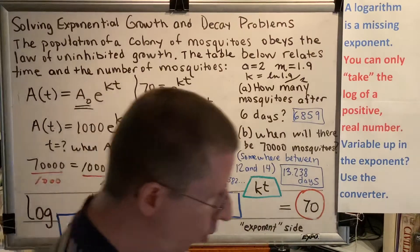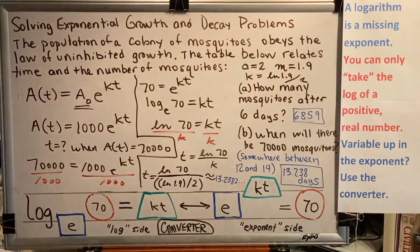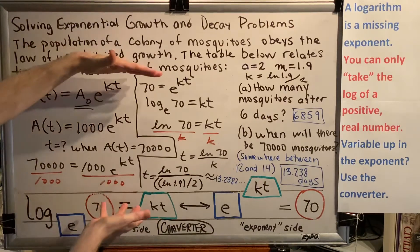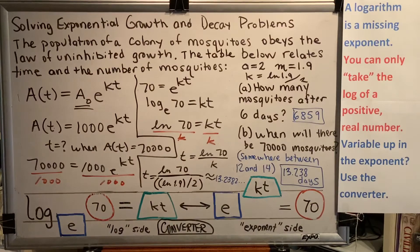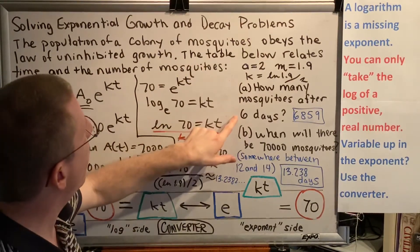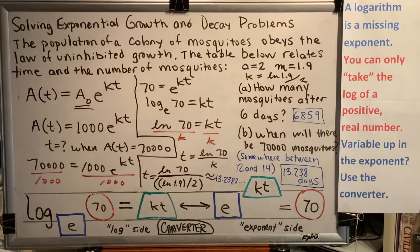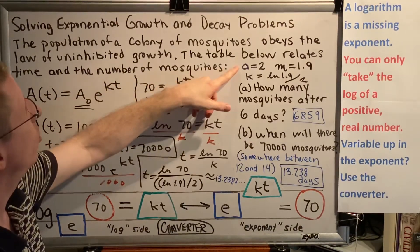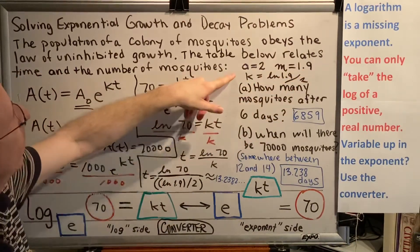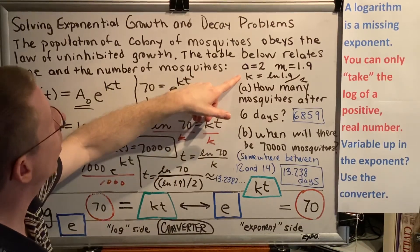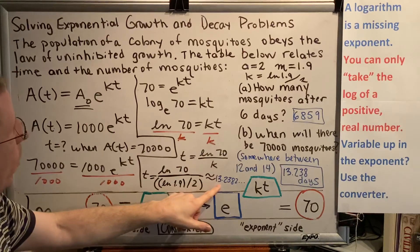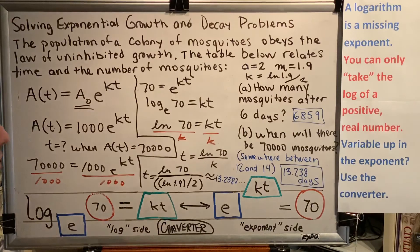Let's briefly recap. In this problem, we learned that we can use both the short way and the long way in a single problem. The short way is finding a pattern: the table had us adding in the time column and multiplying by 1.9 in the amount column. Following that pattern, we found the number of mosquitoes after six days was 6,859 for part A. For part B, we turned to the exponential law equation A(t) = A₀e^(kt). We took A equals 2 and M equals 1.9, plugged them into k equals the natural log of M divided by A, plugged in the starting amount of 1,000, and by solving for t, found it takes 13.238 days for there to be 70,000 mosquitoes.